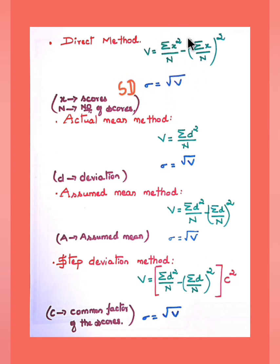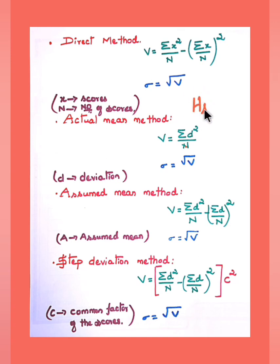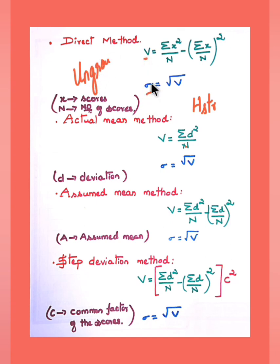To find the variance, use that formula. Standard deviation sigma is the square root of variance. Here, x represents the set of scores x1, x2, x3, and n is the number of scores. Note that all these formulas are for ungrouped data. This formula is not suitable when the scores are not integers.